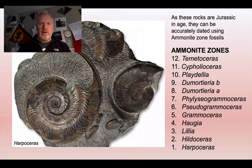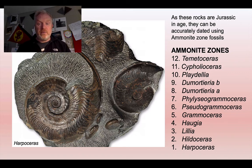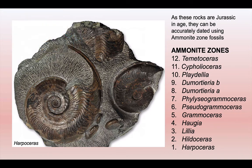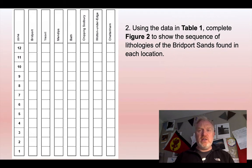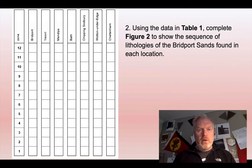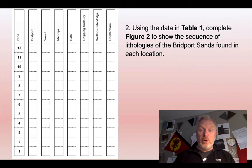Having got those labelled up, these are the ammonite zones. You don't need to worry about learning what these zones are — you won't be asked that — but you could be asked to use some of the data that they help us to generate. You should have a sheet listing each of these zones in order: 1 is the oldest, 12 is the youngest. What I'd like you to do is use the data in Table 1 to complete this figure, showing the sequence of lithologies in each of these seven locations across southern England in terms of which fossil zone we find those lithologies in. Press pause and have a go at that now.